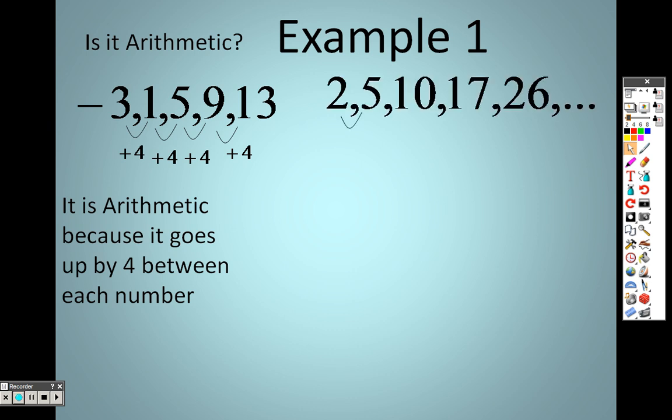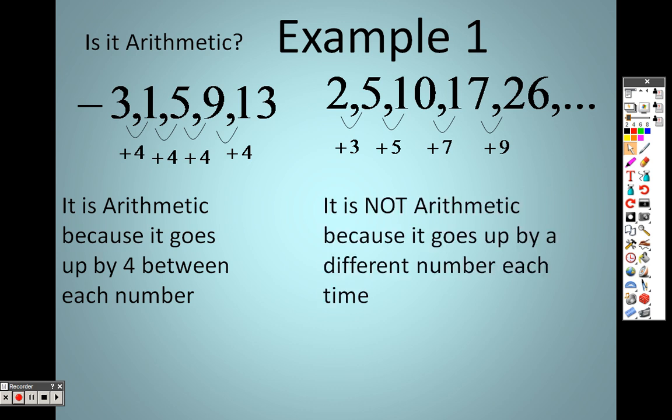However, when we look at this one, we go up by 3, go up by 5, go up by 7, go up by 9, going up by a certain number every single time. But the number is not constant and it's not the same, therefore it is not arithmetic.